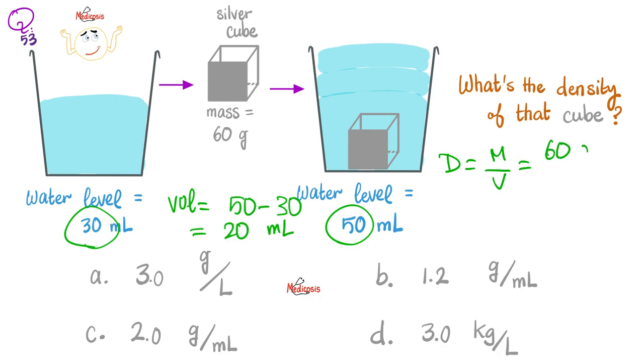Density equals mass over volume. What's my mass? 60 grams. What's my volume? 20 mLs. So my density is 3 grams per mL. I do not have 3 grams per mL, but I know that each kilogram has 1000 grams and each litre has 1000 mLs. The 1000 will cancel with the 1000, so it's also 3 kilograms per litre.